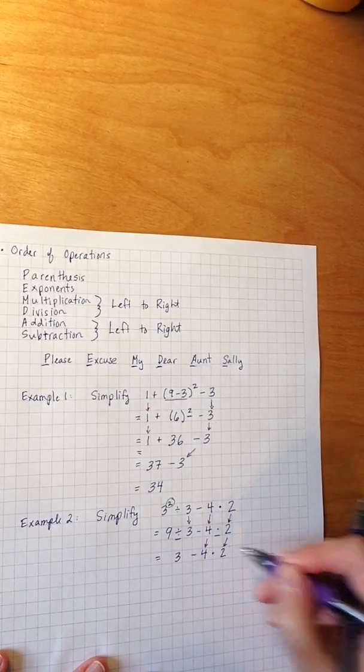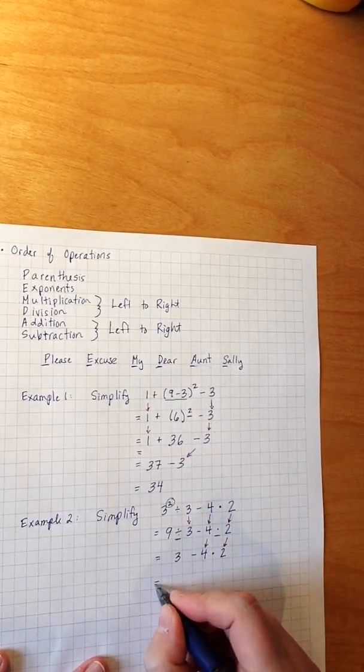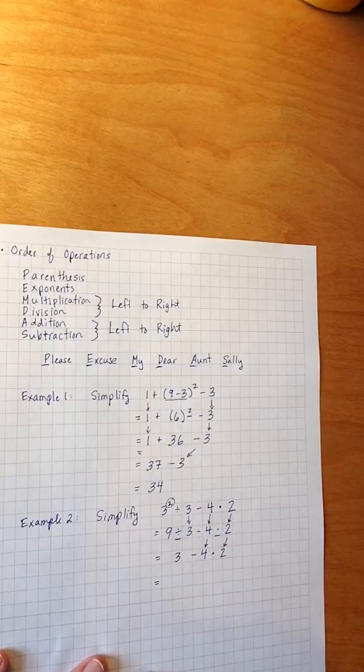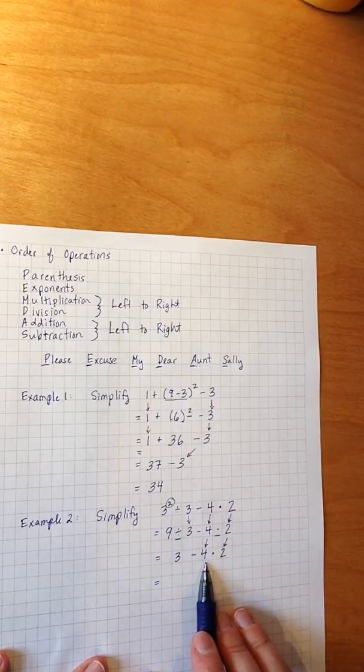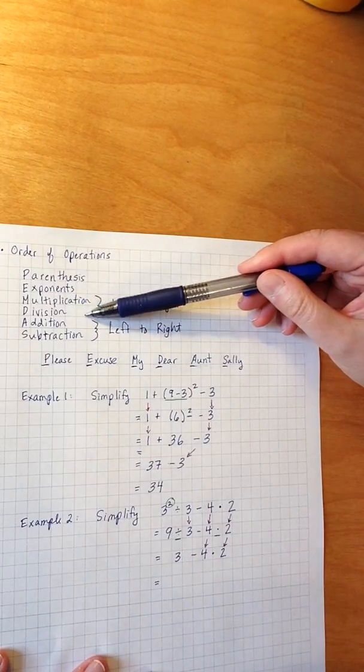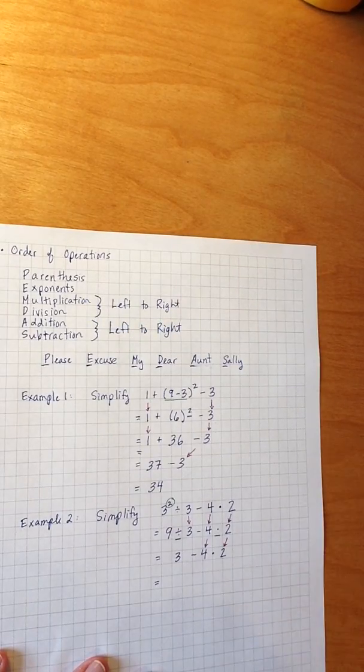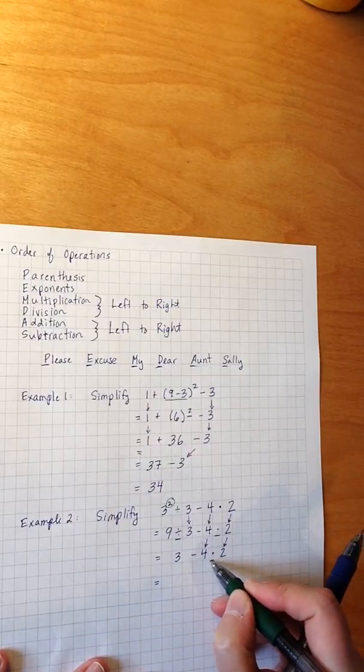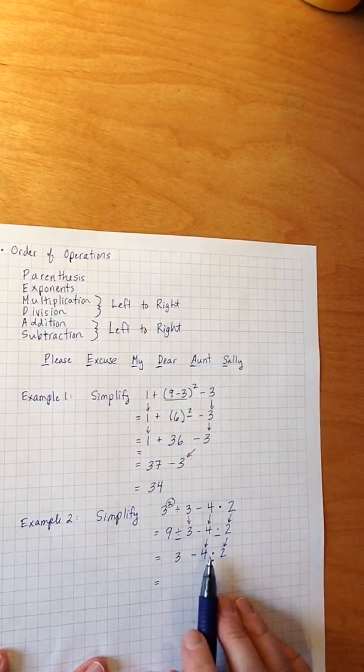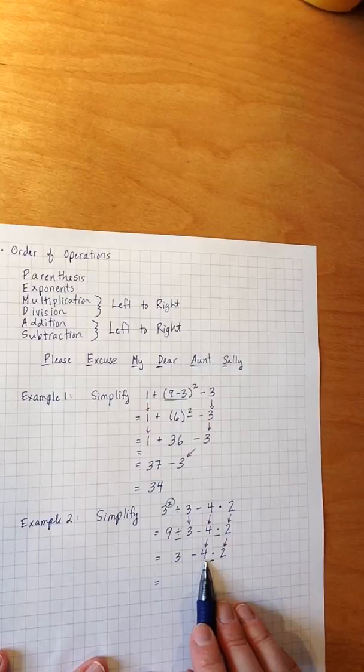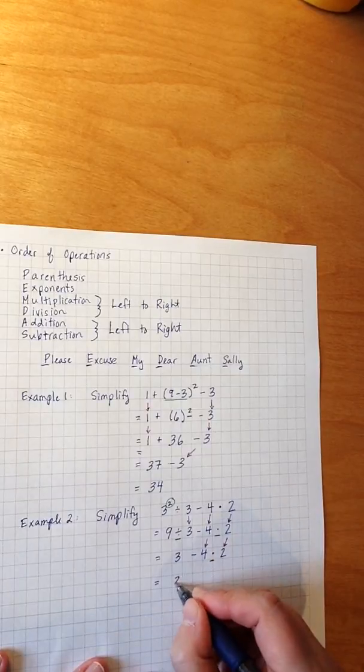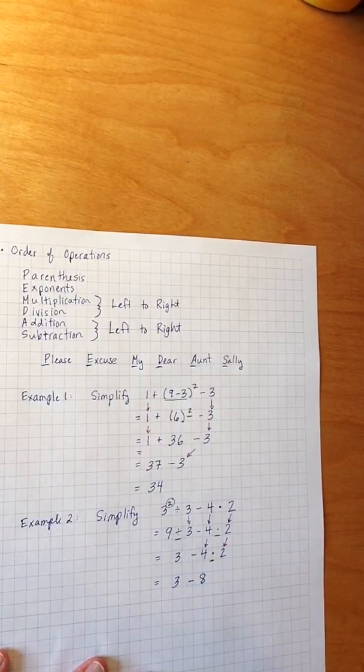So again, that minus 4 stays, that times 2 stays. Now, a common mistake at this point is to try to simplify the 3 minus 4 first. But remember, we are not done with multiplication division yet. We still have this multiplication happening right here. So I'm going to need to simplify the negative 4 times 2 next. That's negative 8.